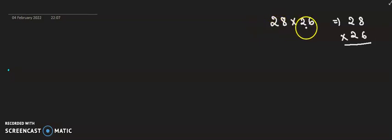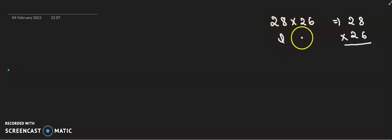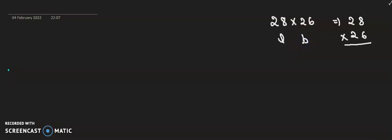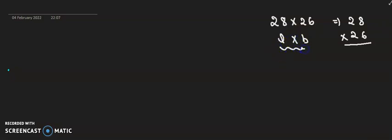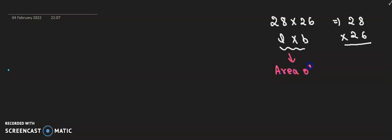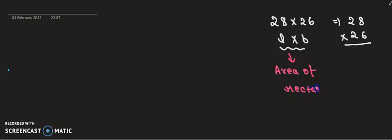So 28 into 26. If I consider this as length and this value as breadth or width, basically what we are doing is we are doing length into breadth. What is length into breadth? We all know that length into breadth is nothing but the area of the rectangle. So basically when we multiply two numbers, we are doing nothing but calculating the area of the rectangle.